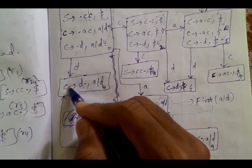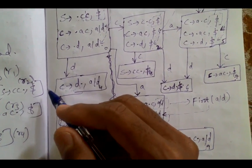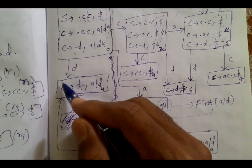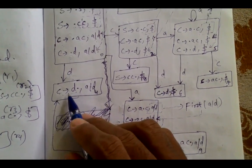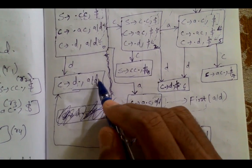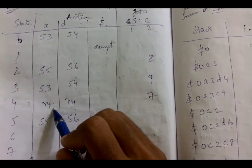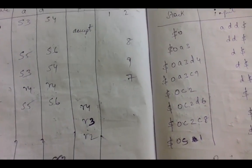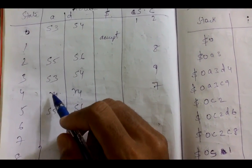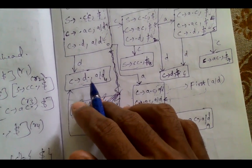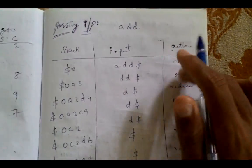After constructing the DFA, we construct the parsing table. In CLR(1), unlike SLR(1), we do not reduce in the FOLLOW of the non-terminal. Instead, we reduce only in the columns corresponding to the lookahead symbols. For example, in the fourth state, C → d• has lookahead a/d, so we place reduce instruction R4 only in columns a and d.